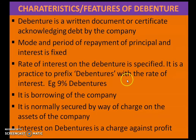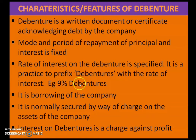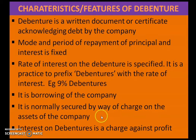The rate of interest on the debenture is specified. It is a practice to prefix debentures with the rate of interest — so whenever you see a percentage figure alongside the word 'debentures,' that figure means the interest rate. For example, 9% is the interest rate. A debenture is a borrowing of the company — whenever a company is in need of funds, they borrow, and a debenture is one way of borrowing.